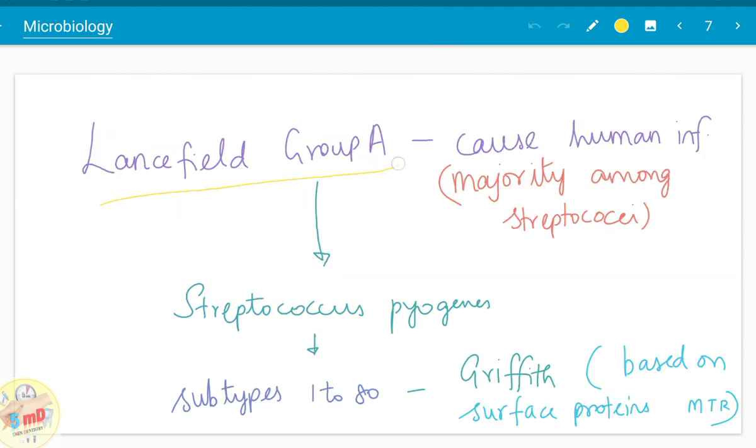Lansfield group A, which we commonly call Streptococcus pyogenes, was again subdivided into 1 to 80 subtypes. 80 subtypes were given by Griffith based on the surface proteins M, T, R. And the group A of Streptococci cause human infections majority among the Streptococci.